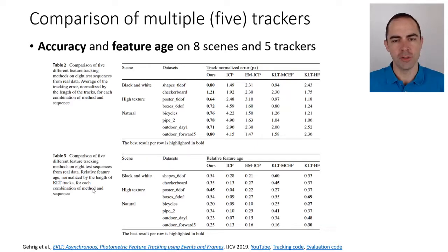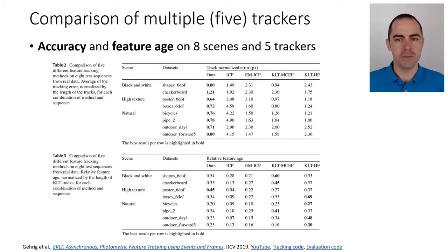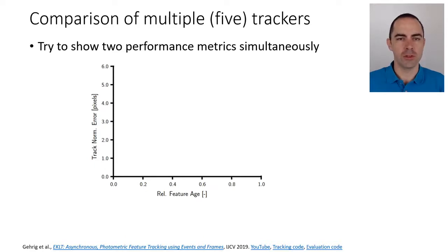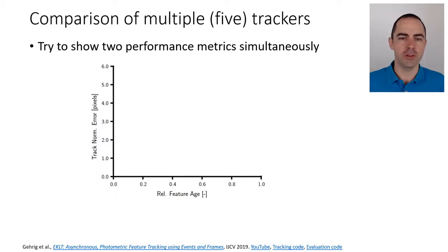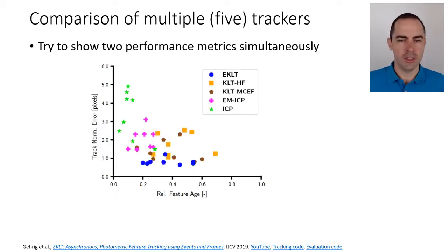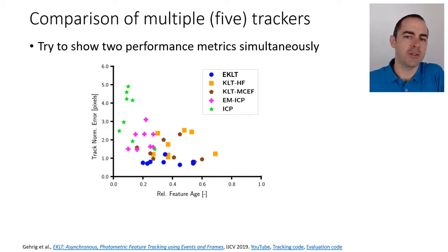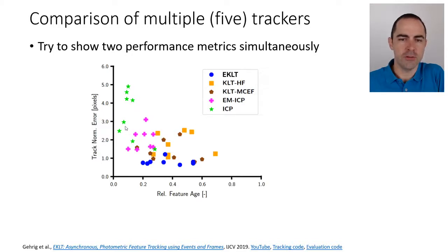These numbers are good for a paper, but it's also useful to plot them. We plot two performance metrics: tracking error on the vertical axis and feature age on the horizontal axis, with different colors for each algorithm. This makes analysis easier. For example, ICP with hard data association is one of the earliest algorithms — it doesn't track for very long and the error is quite high.